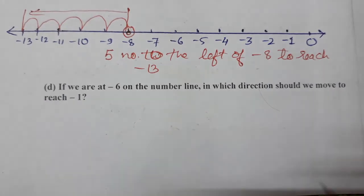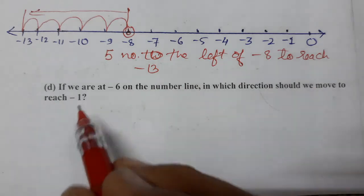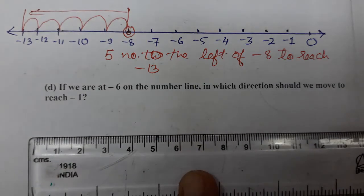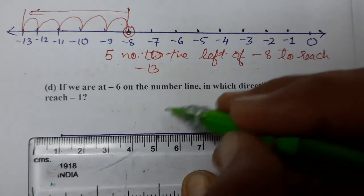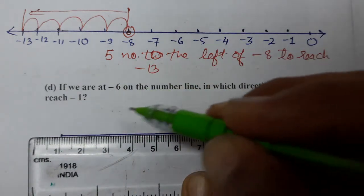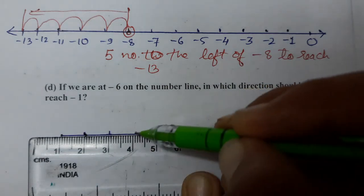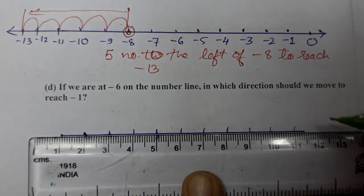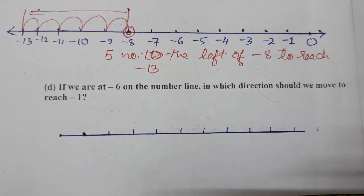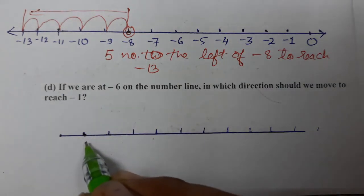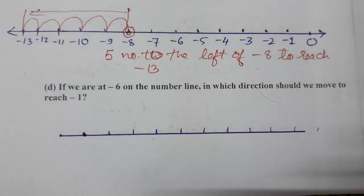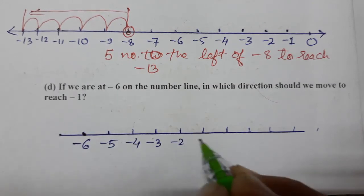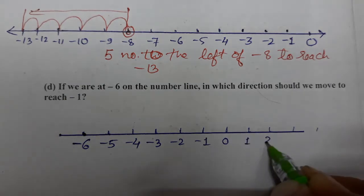Now part D: if we are at minus 6 on the number line, in which direction should we move to reach minus 1? Let's make a number line again. We mark the points: minus 6, minus 5, minus 4, minus 3, minus 2, minus 1, 0, 1, 2, 3 and so on.